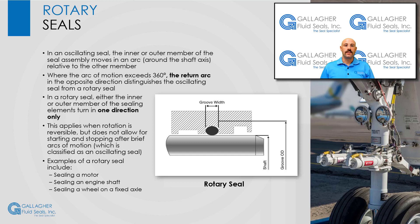In a rotary seal, either the inner or outer member of the sealing elements turn around the shaft axis in one direction only. This applies when rotation is reversible, but does not allow for starting and stopping after brief arcs of motion, which is classified as an oscillating seal. Examples of a rotary seal include sealing a motor or engine shaft, or a wheel on a fixed axle.